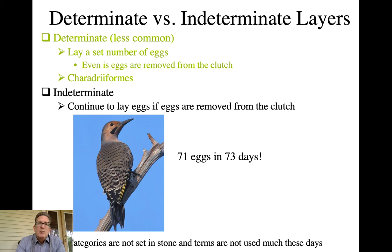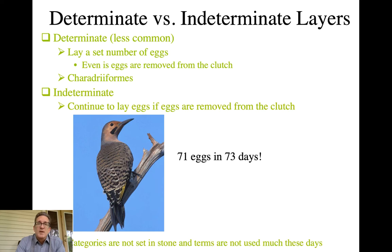Determinate versus indeterminate layers — realize these categories are not set in stone. It really depends on the ecology and how capable a species might be able to replace eggs in the nest, and there could be variation within a species. These terms aren't used too much today, but they're terms you might run across in the literature.